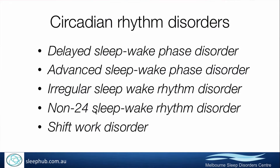The main circadian rhythm sleep disorders are delayed sleep phase syndrome, advanced sleep phase syndrome, irregular sleep-wake rhythm disorder, non-24 sleep-wake rhythm disorder, and shift work disorder. I'll talk through each of these briefly to give you an idea of what each of them are.